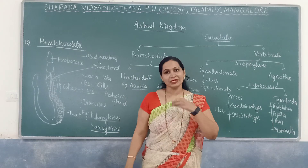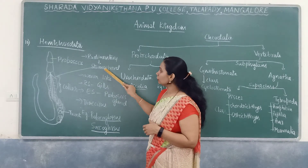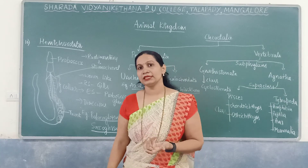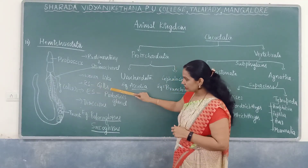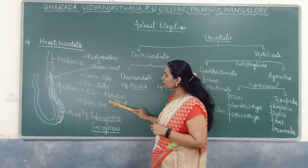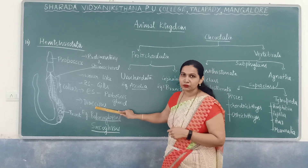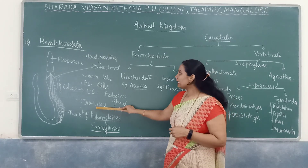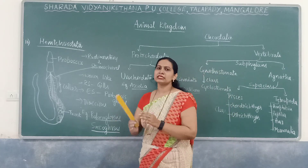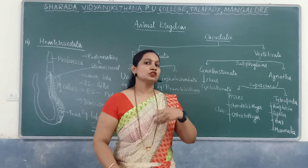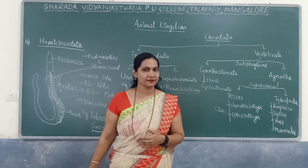In the proboscis region there is a notochord-like structure called stomochord, which is a rudimentary structure — that is why they are known as semi-chordates. They have gills for respiration and excretion takes place through the proboscis gland. They are dioecious. Examples include Balanoglossus and Saccoglossus.